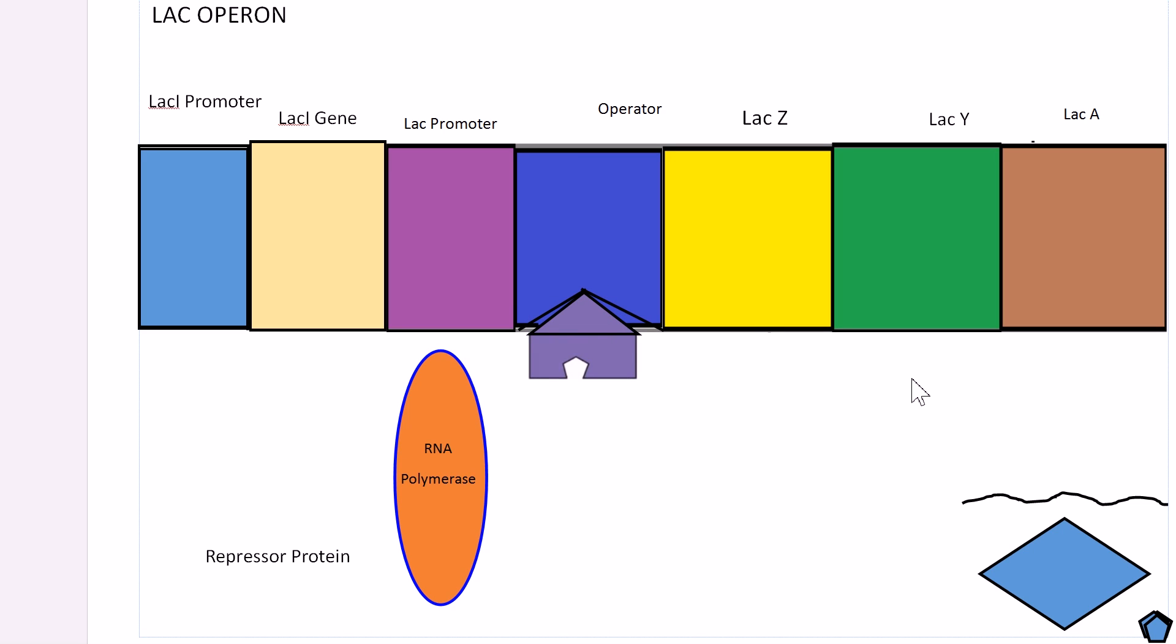Another example would be ONPG, which is cleaved to produce the intensively yellow compound ortho-nitrophenol, and is commonly used as a substrate for beta-galactosidase as well.